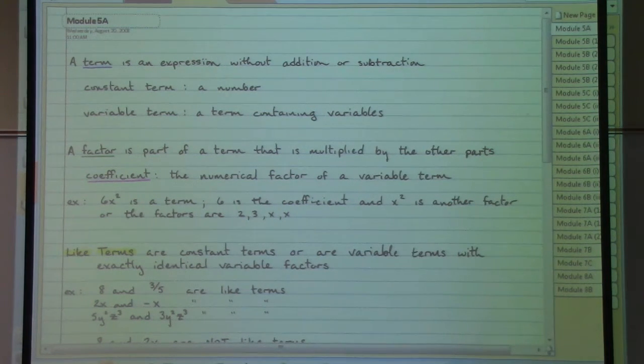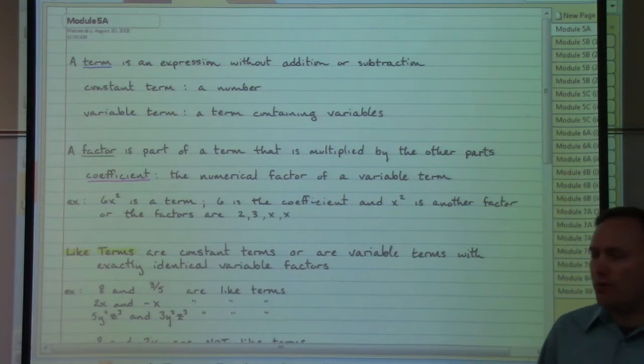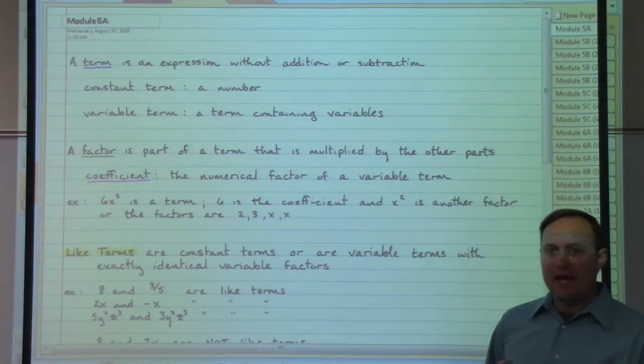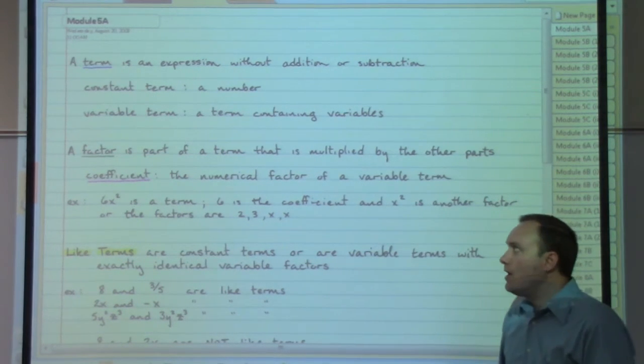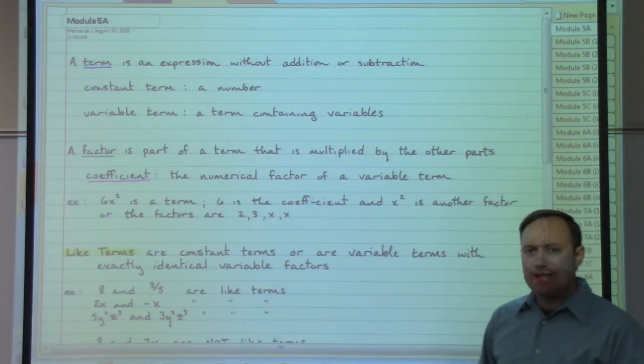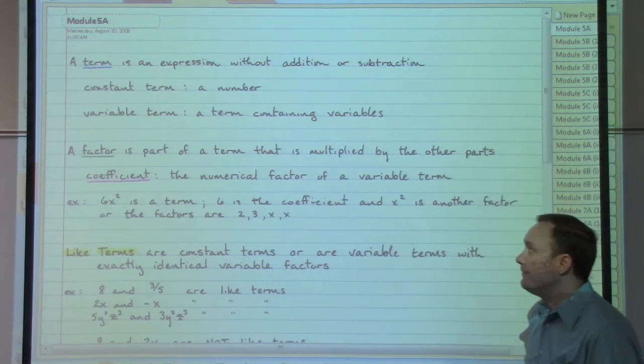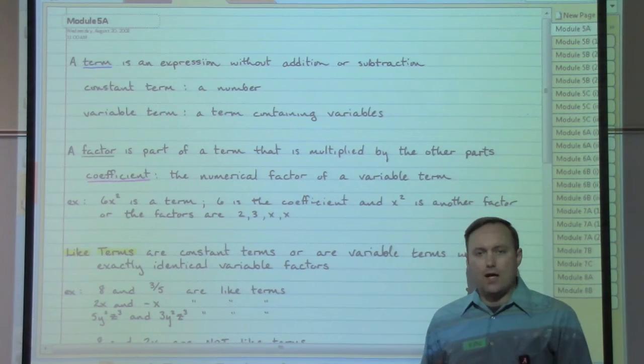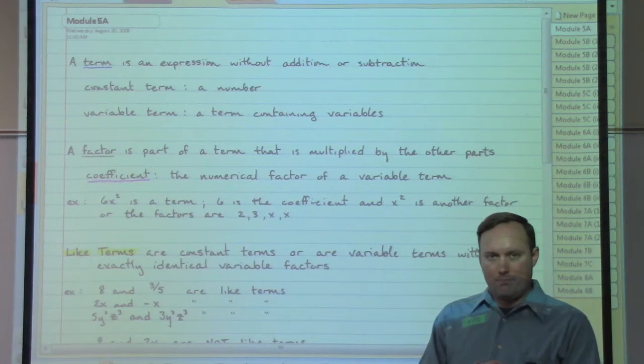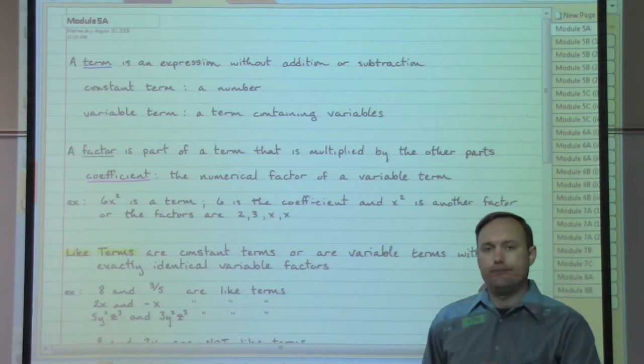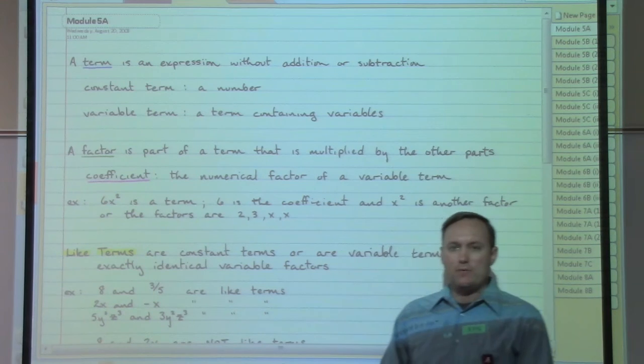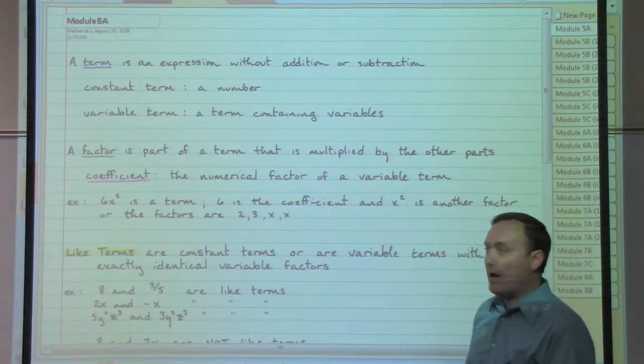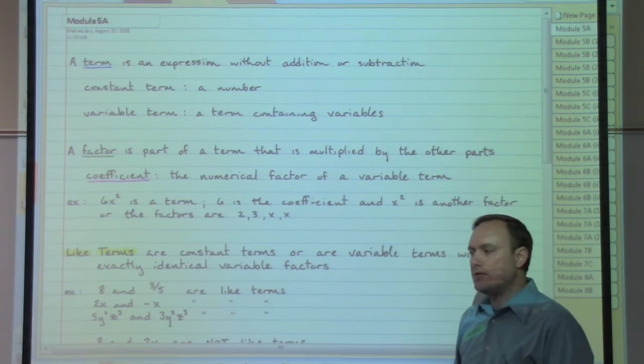To begin a more thorough discussion of algebra, we need to start going over some basic vocabulary. We're going to start with two main ideas: term and factor. A term is an expression that does not have any adding or subtracting in it. We can refer to terms based on two kinds: a constant term is a number, and a variable term is a term containing variables.